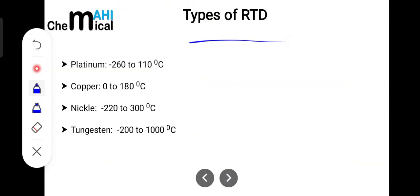If we talk about the different types of RTD, then this RTD consists of a sensing element as I have already told. These sensing elements are made up of platinum, copper, nickel, and tungsten. They each have applications depending upon the temperature in which you are going to use it.